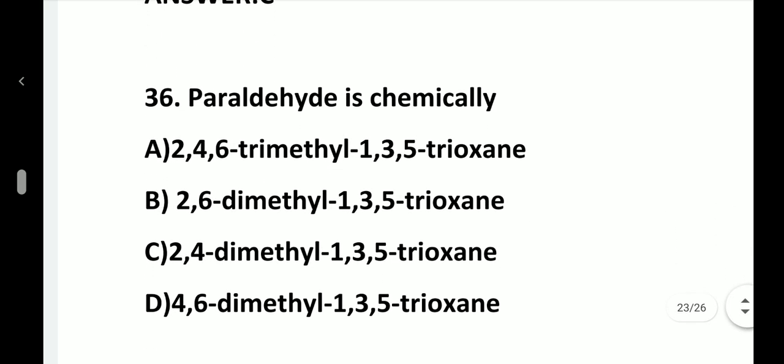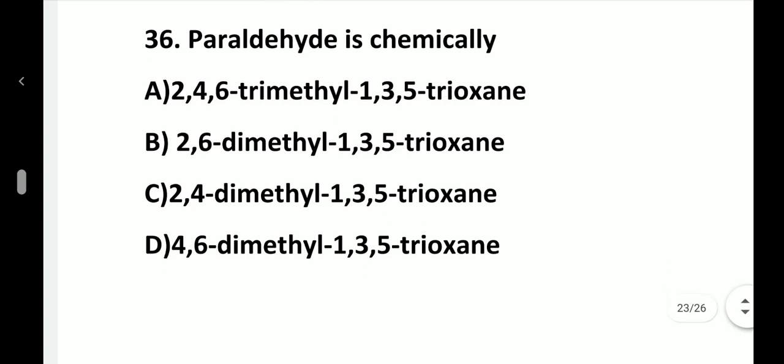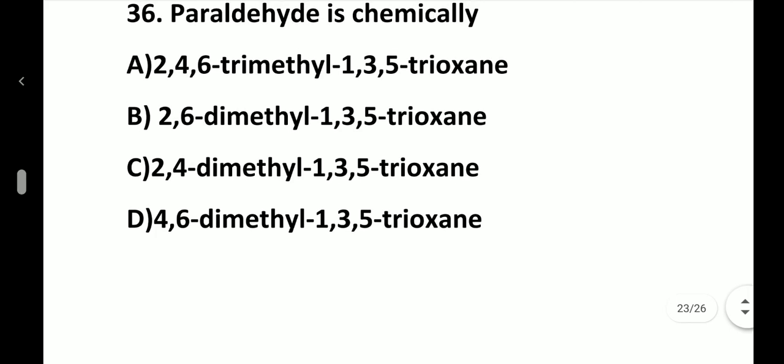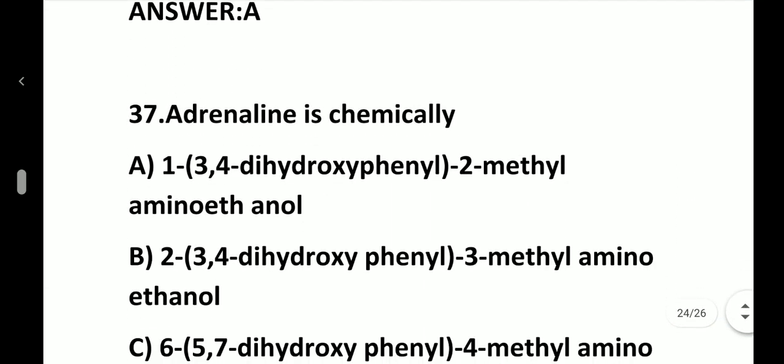Question number 36. Paraldehyde is chemically: option A, 2,4,6-trimethyl 1,3,5-trioxane; option B, 2,6-dimethyl 1,3,5-trioxane; option C, 2,4-dimethyl 1,3,5-trioxane; option D, 4,6-dimethyl 1,3,5-trioxane. Answer is option A, 2,4,6-trimethyl 1,3,5-trioxane.